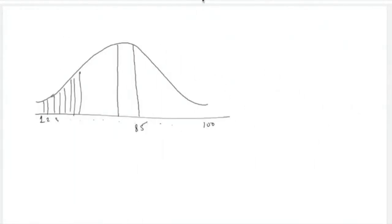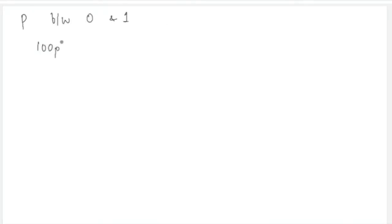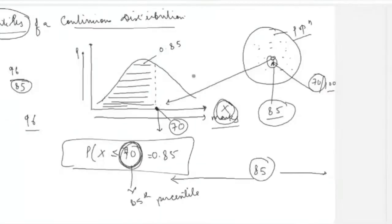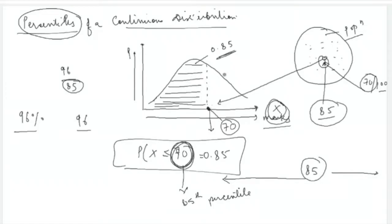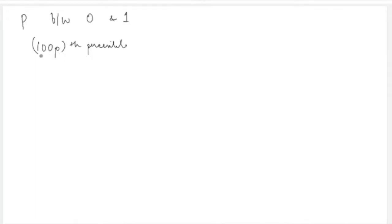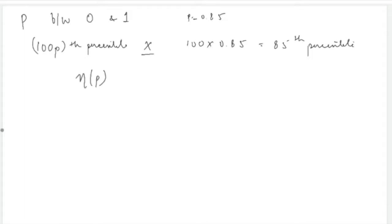Now let's define this formally. Let p be any number between 0 and 1. The 100×p-th percentile corresponds to p being the shaded area under the distribution. So if p = 0.85, we are talking about the 85th percentile.